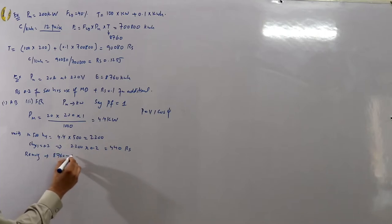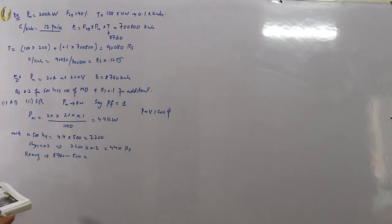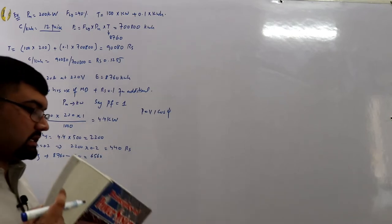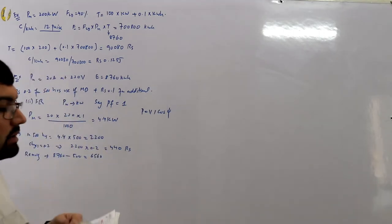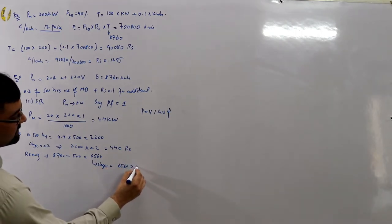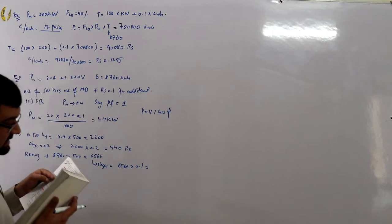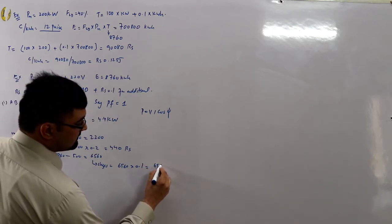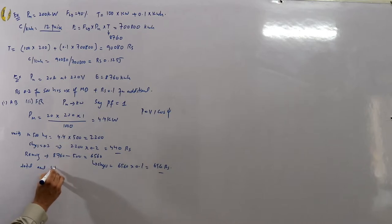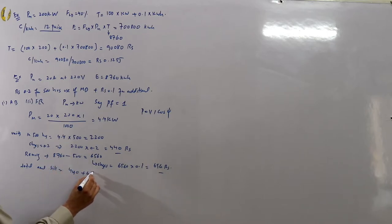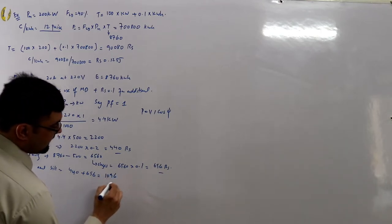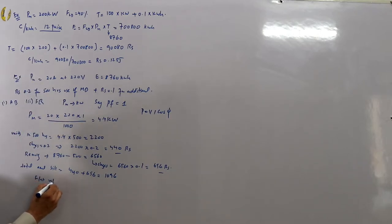The remaining units are 8760 − 500 = 6560 units, charged at 0.1 rupees each, giving 6560 × 0.1 = 656 rupees. The total annual bill is 440 + 656 = 1096 rupees.